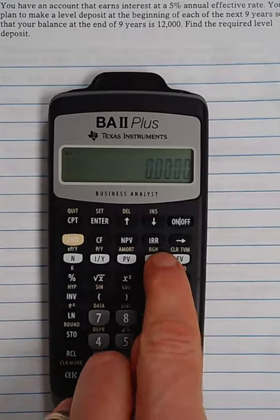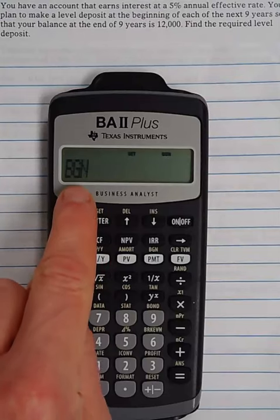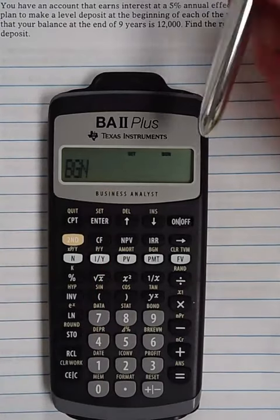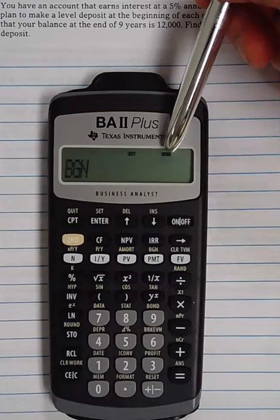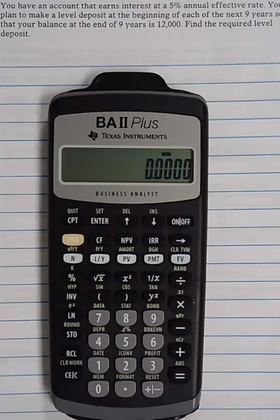To get in there, we use our second begin. Notice right now it's set at end. If we do second set, it changes it to begin. And also notice the little BGN pops up here at the top of the screen. Now we can just do second quit and go back to our home screen.